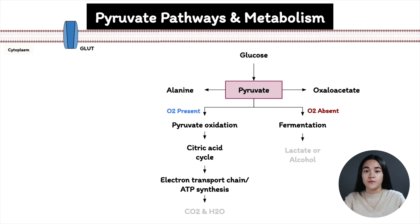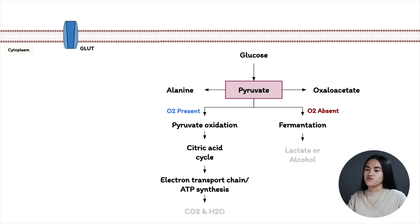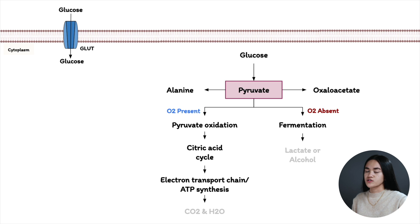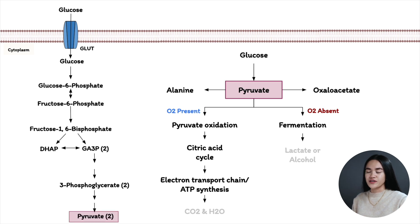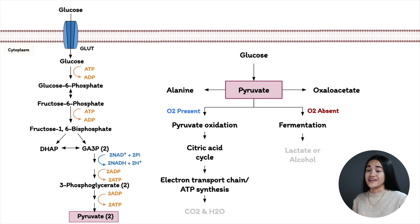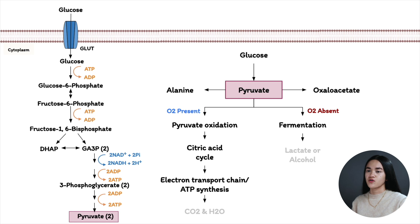Before we break down each fate of pyruvate, let's do a quick review of how pyruvate is produced via glycolysis. Glycolysis occurs in the cytosol or cytoplasm of the cell. Glucose enters the cell via GLUT transporters where it is oxidized in a 10-step process broken down into two phases. In the preparatory phase, we invest two ATP molecules, and in the payoff phase, small amounts of ATP and NADH are produced. In both aerobic and anaerobic conditions, we produce pyruvate via glycolysis, converting one molecule of glucose to two molecules of pyruvate.